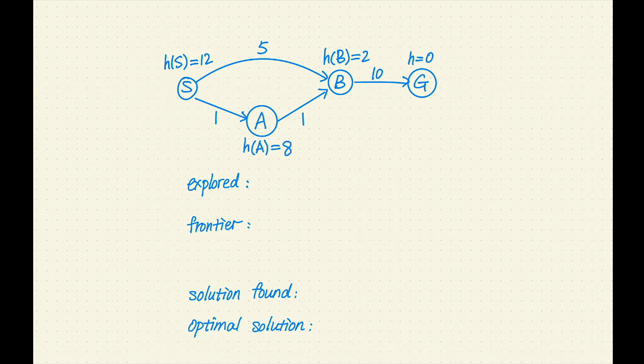S is a start node and G is a goal node. There are two paths from S to G. The top path is S-B-G with a total cost of 15. The bottom path is S-A-B-G with a total cost of 12. The bottom path is the optimal solution.